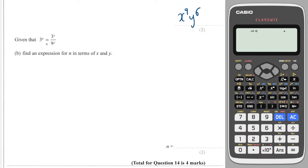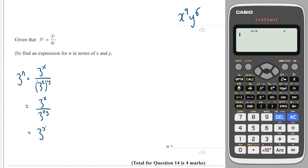Now we need to rewrite our bases. We've got two terms with base three but one has base nine, so instead we write the base nine term as three squared, then to the power of y. Multiplying up those two brackets gives three to the 2y, and when dividing we subtract the powers to get three to the x minus 2y. Since both sides have base three, the powers must be equal, so n equals x minus 2y.